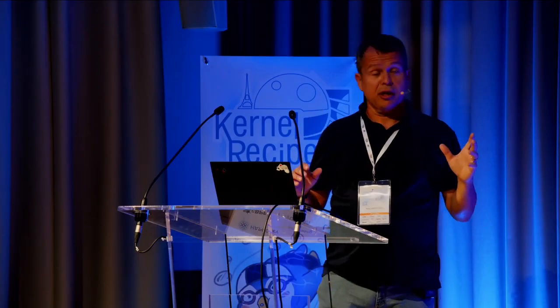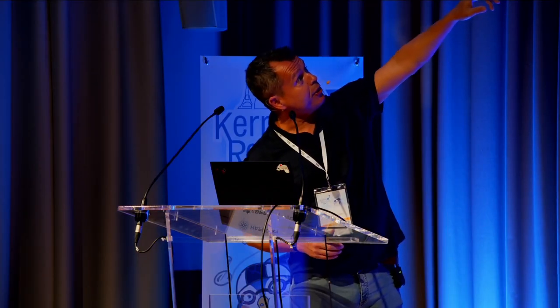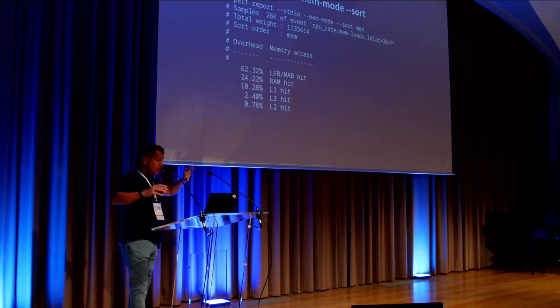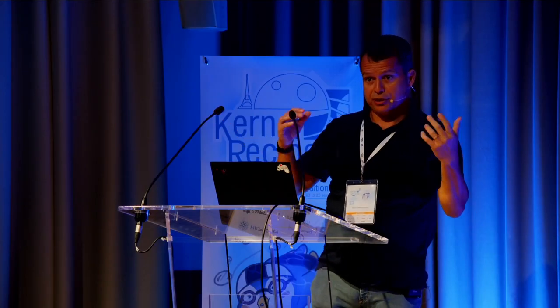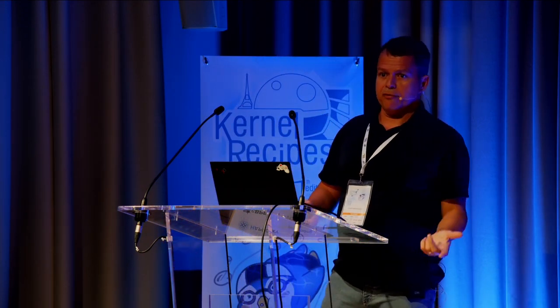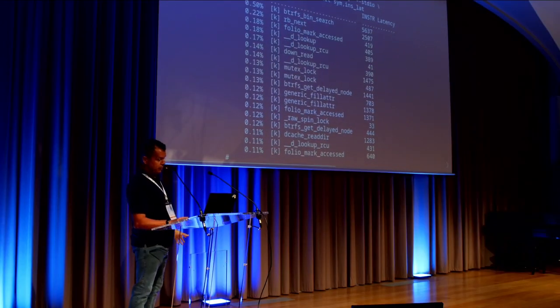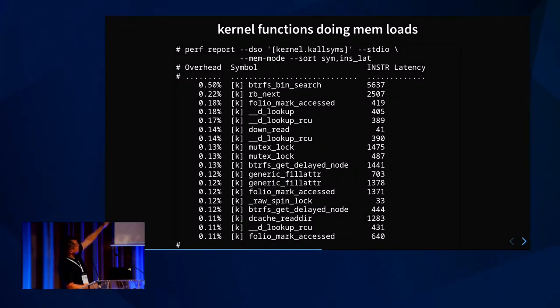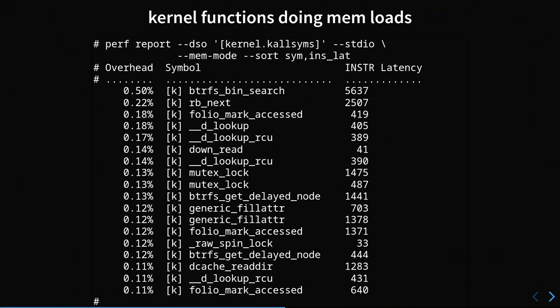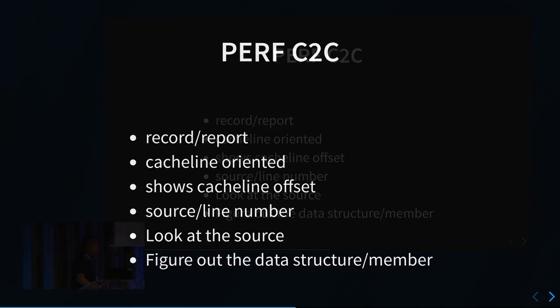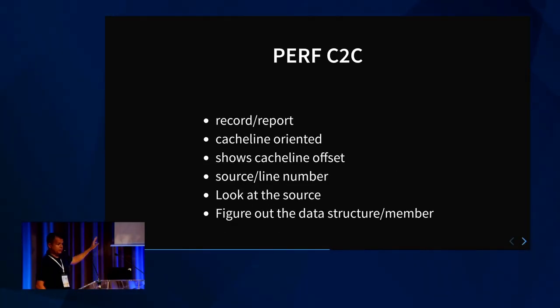You can combine, when specifying '--sort', any of the other sort orders that Perf has. You can see by TID, thread, process, cgroup, and you can do this hierarchically. For example, sort by symbol and instruction latency — so you can see that BTRFS being searched is the one causing more instruction latency.